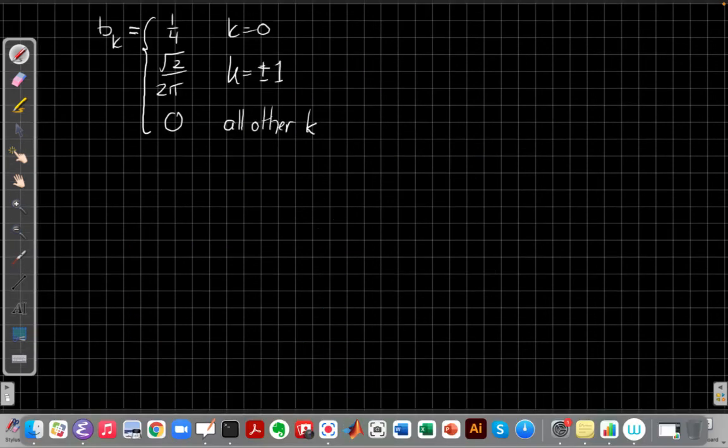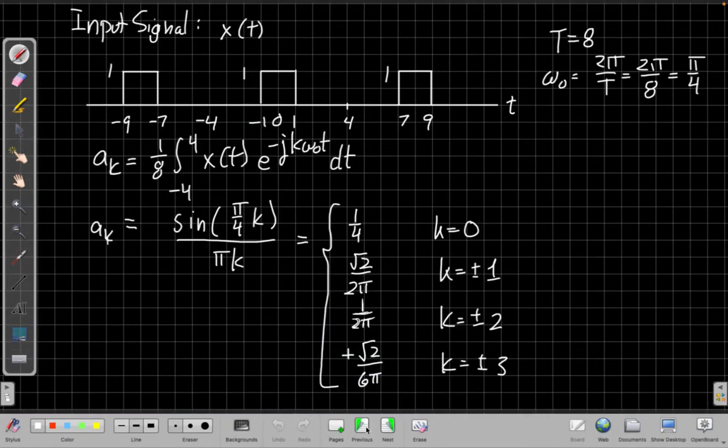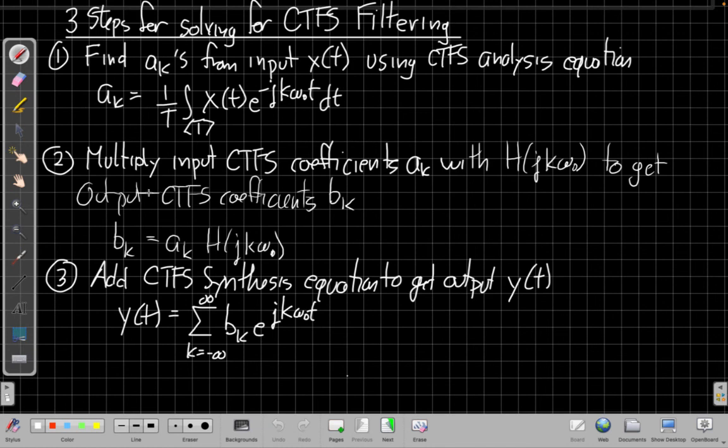Let me do that. So my b sub k's is a quarter when k equals 0, root 2 over 2 pi for k equals plus or minus 1, and 0 for all the other k's. So with that step, I've now finished, if I go back to my roadmap, I've finished step 2 here. I've got the b sub k's by multiplying. I'm going to stop this video here, and in the exciting sequel, we'll hear the conclusion of our story with step 3. Okay, see you soon.